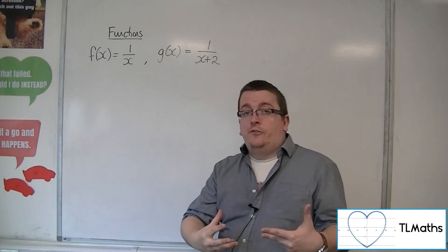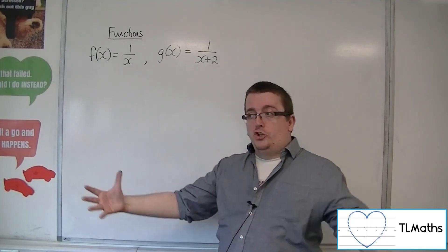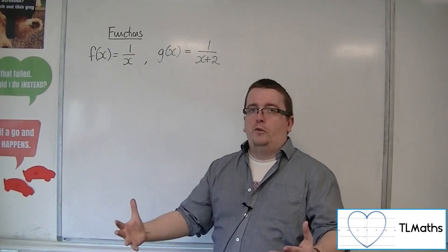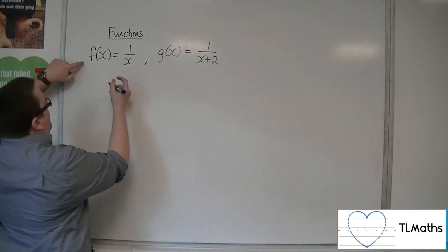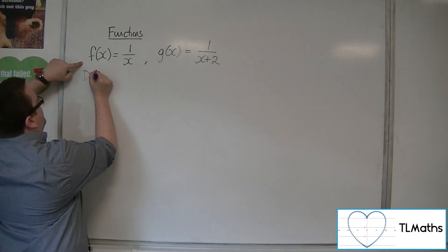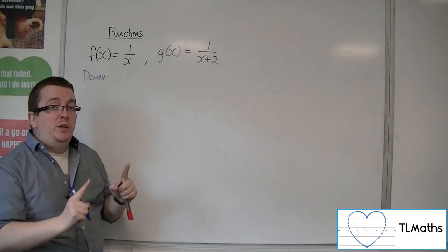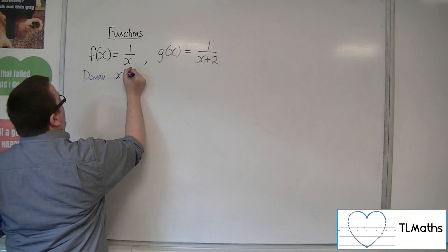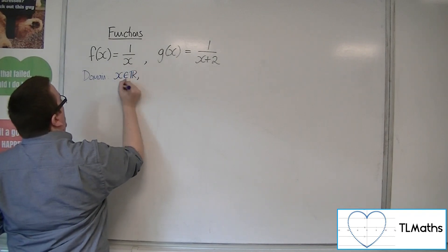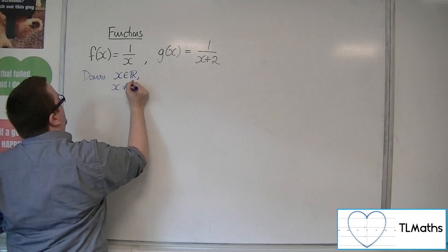Now, we can identify the domain, or the largest possible domain, for both of these functions. So let's do that first. For f of x, we have a domain where the only problem value of x will be 0. So x can belong to any real value apart from 0.